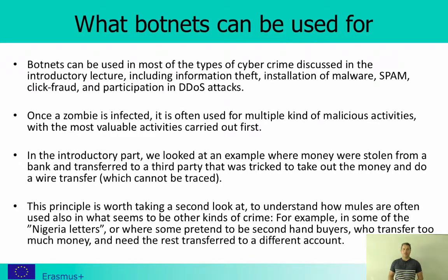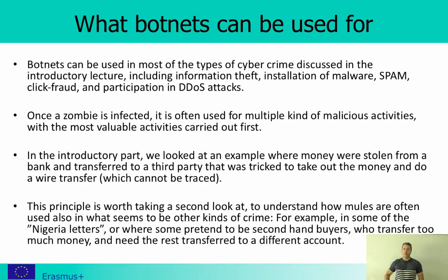But what often happens is that you are taking the money out — the money can be transferred electronically to you. This is a traceable transaction. Then the money are taken out by you, for example in cash, given to the Western Union, where it cannot be traced anymore. So the electronic traces stop at you, and then these money are from a different kind of crime, and you are the one helping to get them out to the criminals.